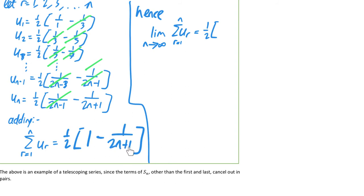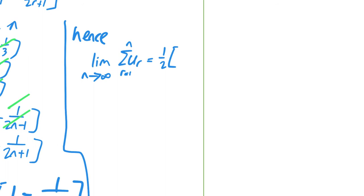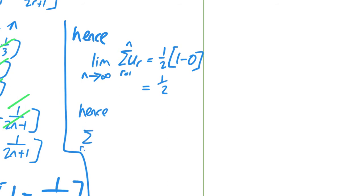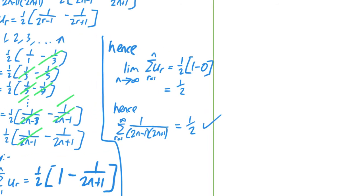If you put in n = one million, one divided by two million plus one is tiny; as n grows to a billion, a trillion, it gets smaller and smaller. So the limit is one half times (1 minus 0) = one half. Hence the sum from r=1 to infinity of 1/[(2n−1)(2n+1)] equals 1/2.